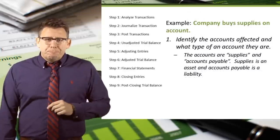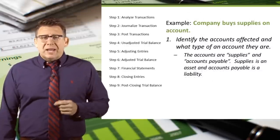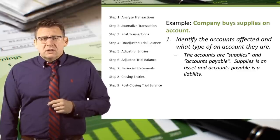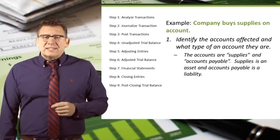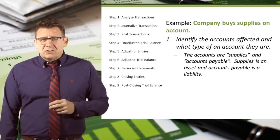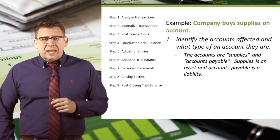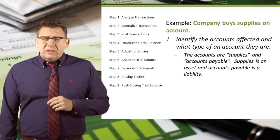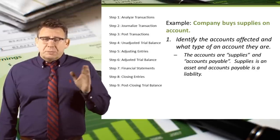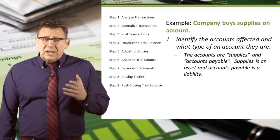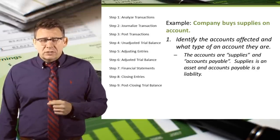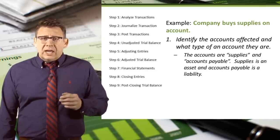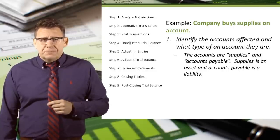Example: a company buys supplies on account. Part one is identify the accounts affected and what type of accounts they are. In this example, the accounts are supplies, an asset account, and accounts payable, a liability account.